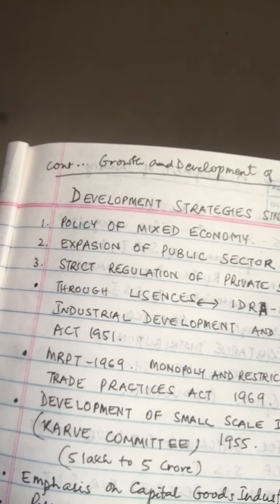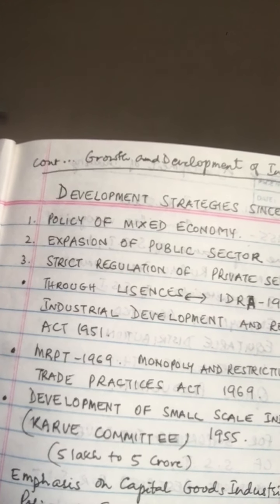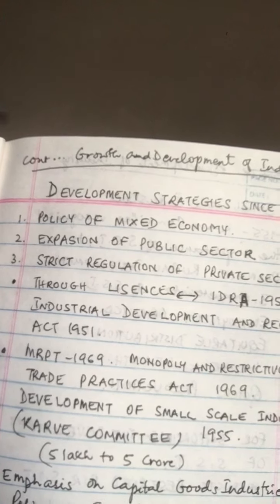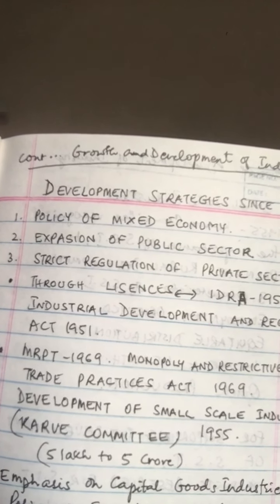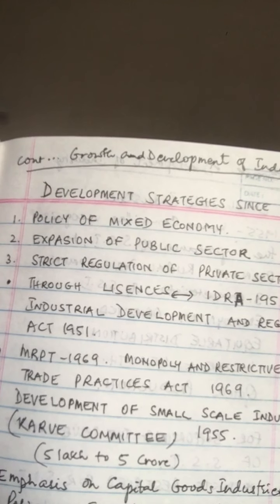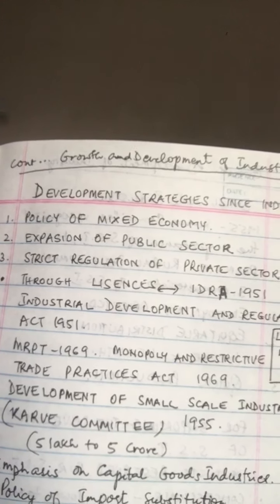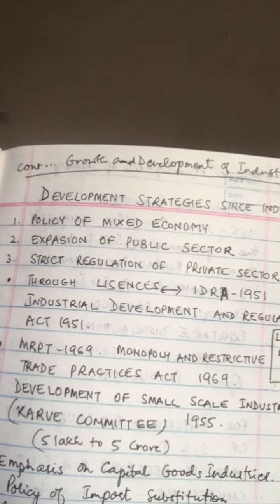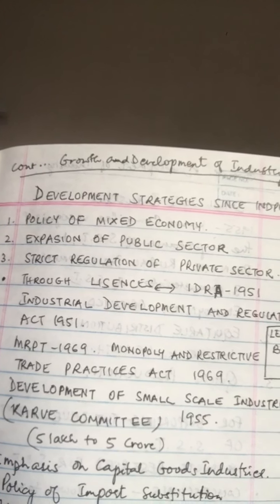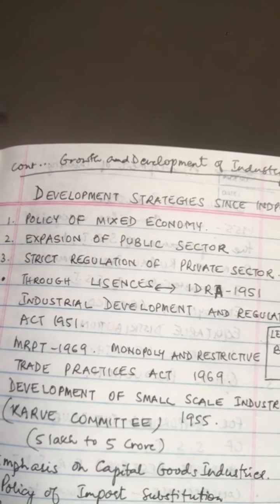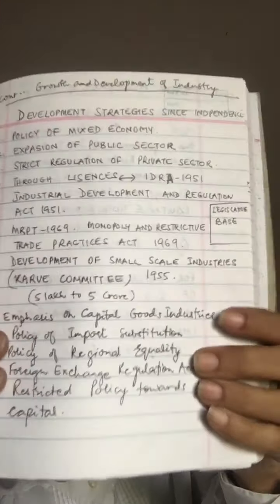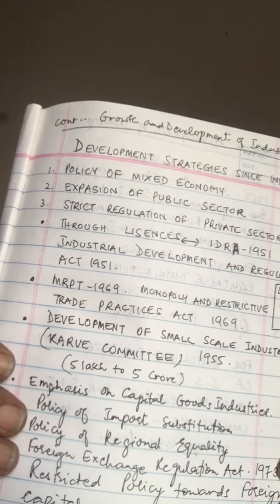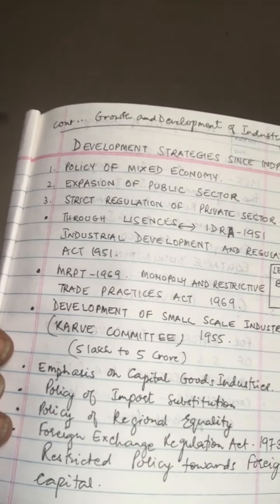The next strategy was emphasis on capital goods industries. At that time, they wanted to develop capital goods industries like iron and steel, producing machinery and equipment, because such industries add to the productive capacity of the economy and lead to faster development in future. They wanted India to stop being an exporter of primary products and importer of machinery, and instead build her own machine-making capacity to lay the foundation for a strong and self-reliant economy.